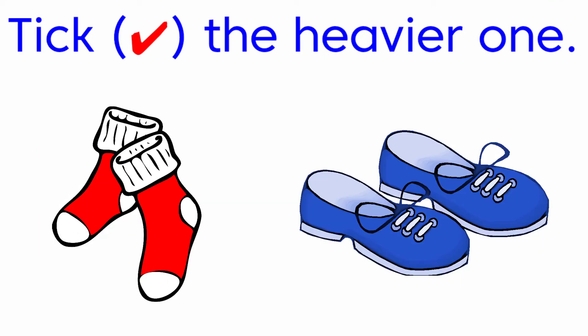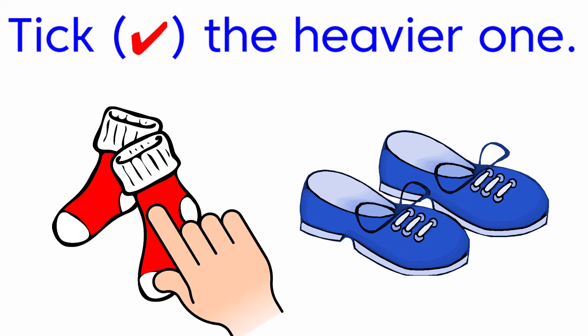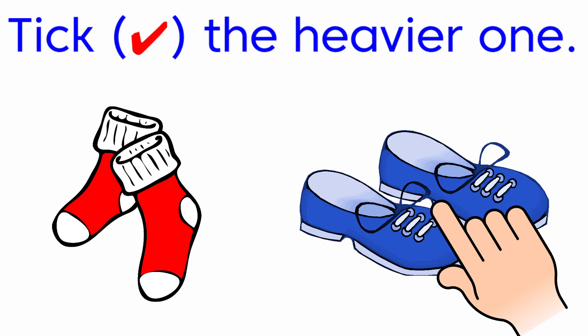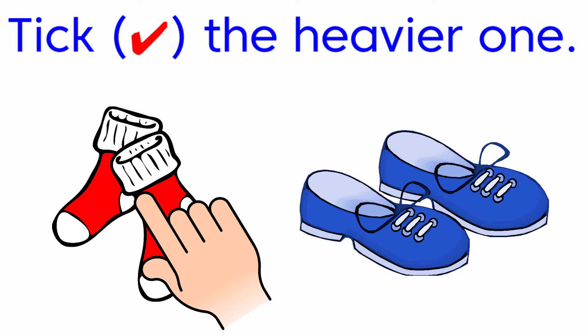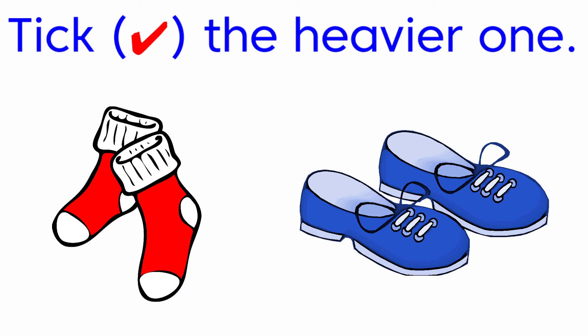Next one, tick the heavier one. Here they have given socks and shoes. Among these 2, which is heavy? Yes, shoes are heavy. And which is light? Socks are light. So here shoes are heavy, and we are going to put a tick for the shoes.